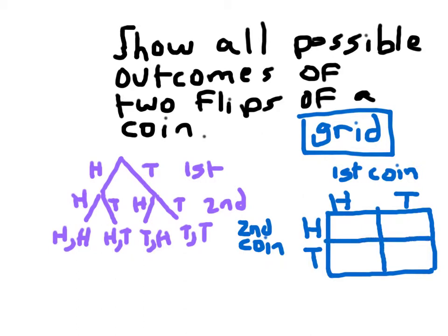This now is a grid. Within each of those parts of the grid there, head for the first coin, heads for the second coin, so this possible outcome is heads then heads.